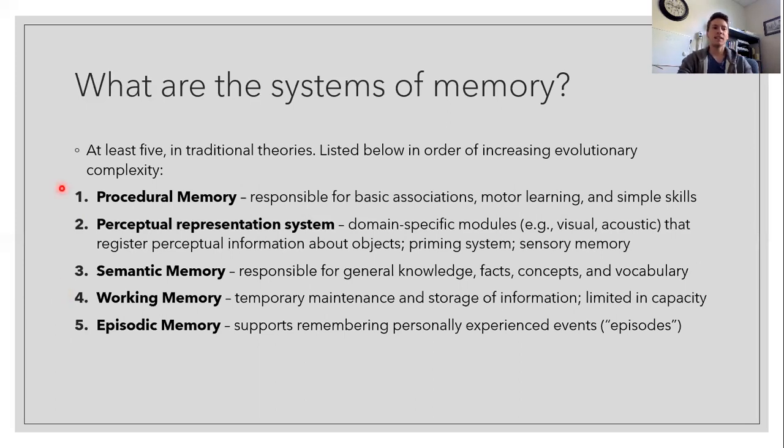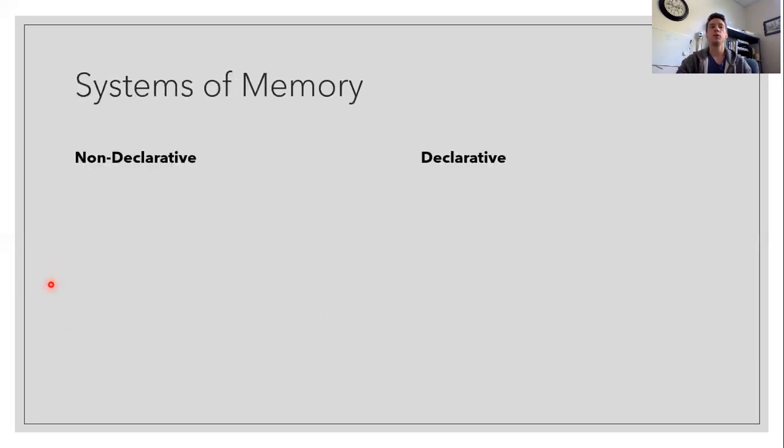And so we can take these five systems of memory and we can dichotomize them into two classifications. And those are non-declarative versus declarative. Sometimes you'll see the word non-declarative as being more implicit and declarative as being explicit. So you can put these into words, but you can't put those into words.